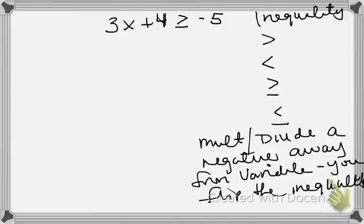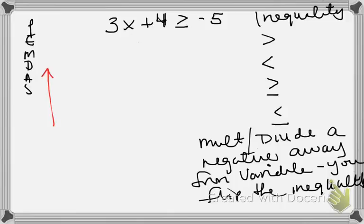We're going to do the same thing we've been doing before — look at PEMDAS again. Remember, we have a variable here, so because we have a variable, we're going to think PEMDAS backwards. In algebra, we go backwards. So I ask myself: what's my variable? X. What's being done to X? It's being multiplied by three and it's being added by four.